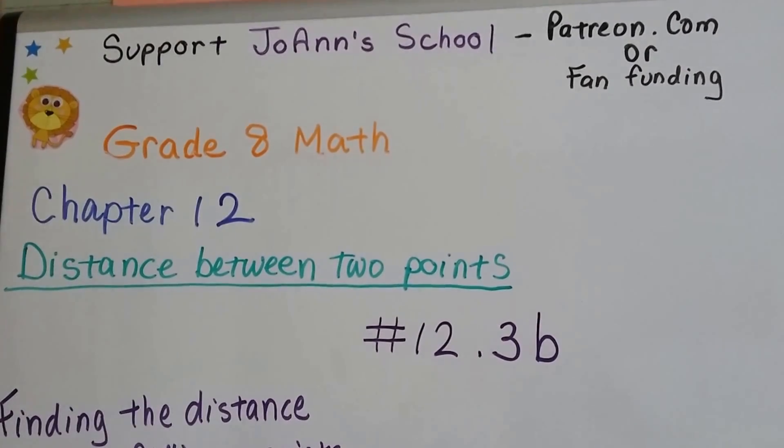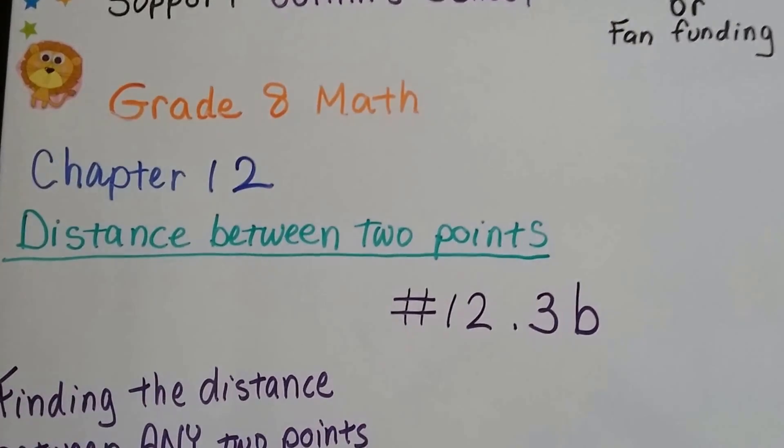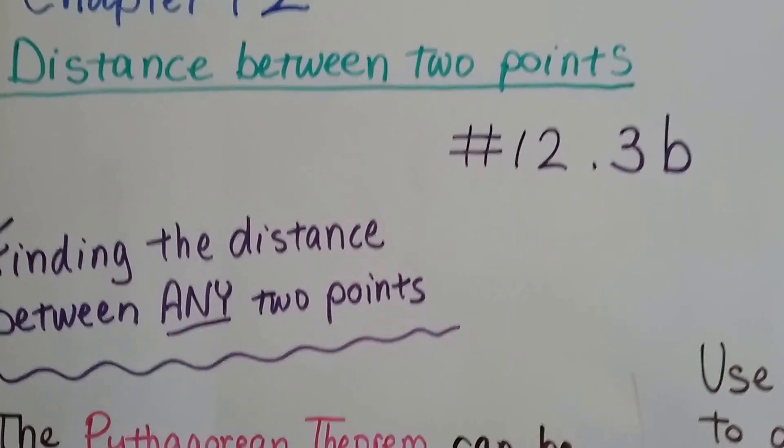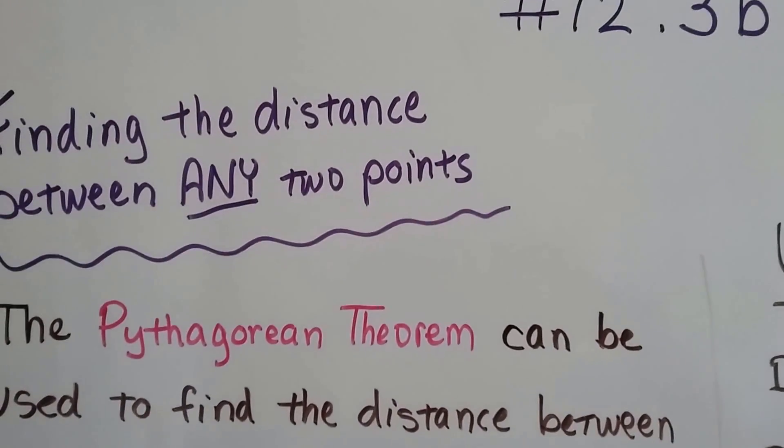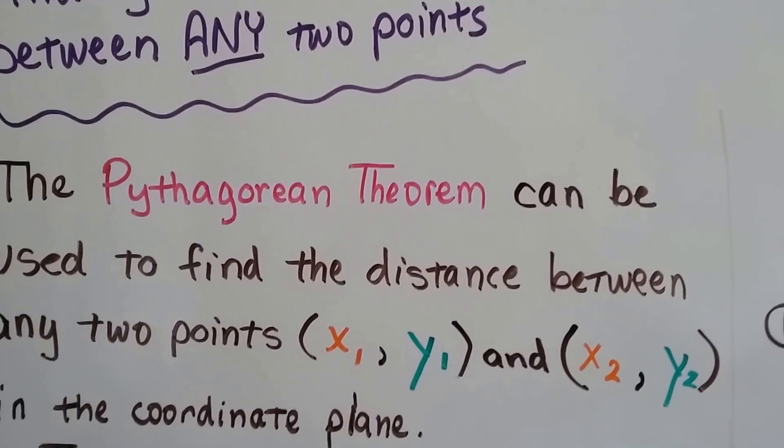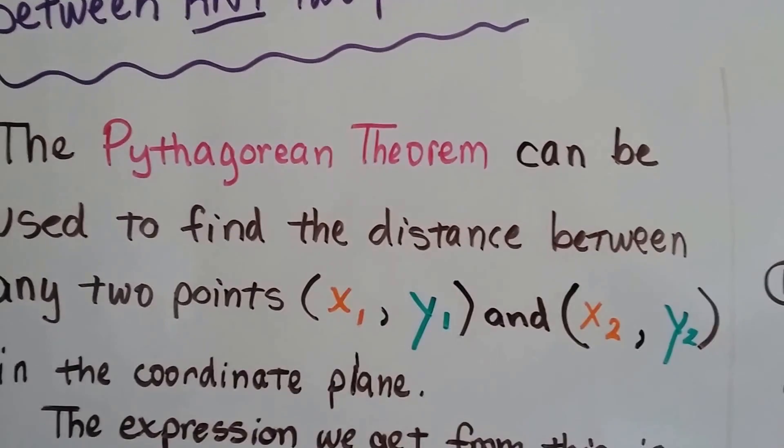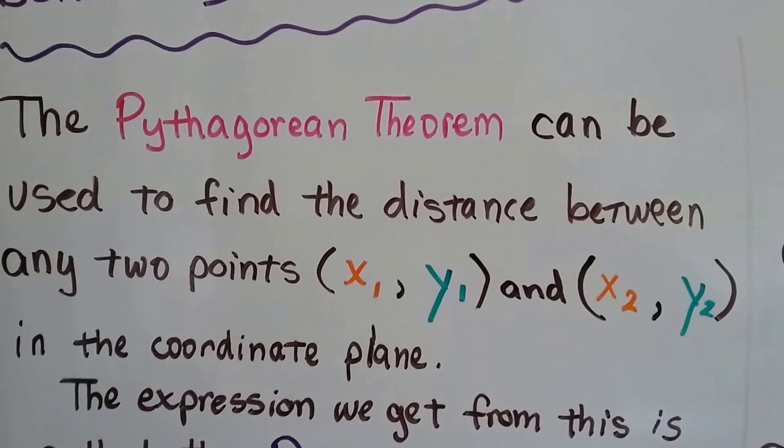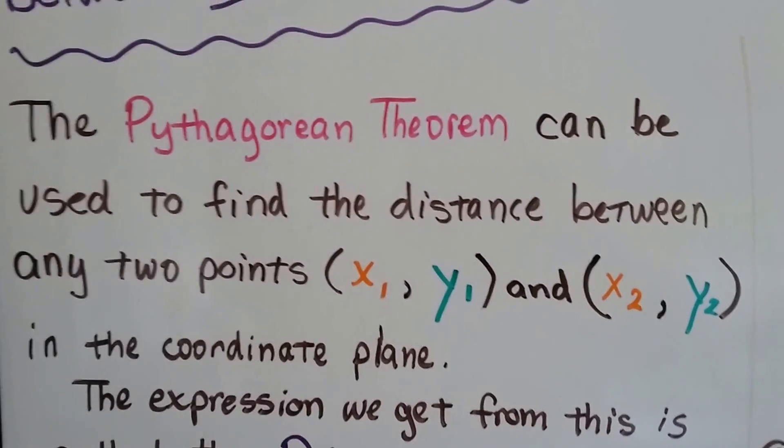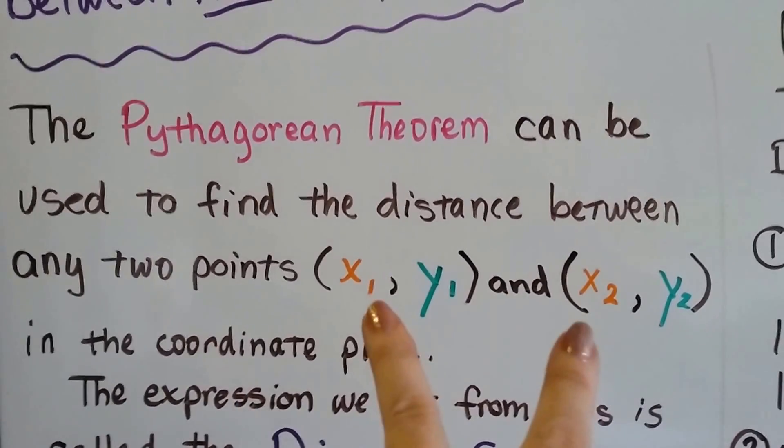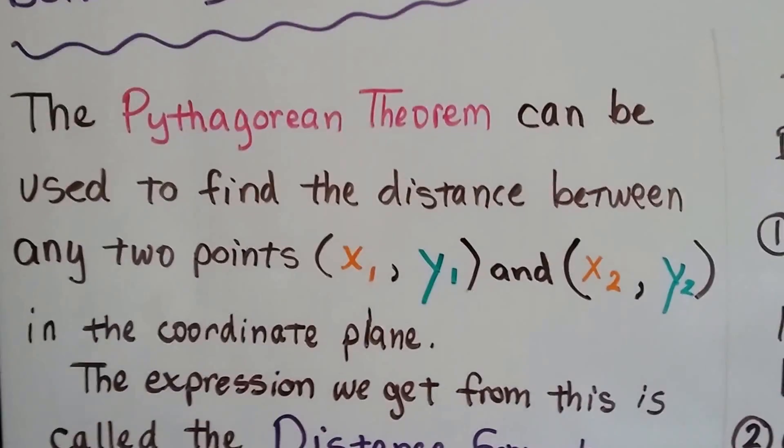Grade 8 math number 12.3b. We've been talking about the distance between two points, and now we're going to talk about finding the distance between any two points. We've also talked a lot about the Pythagorean Theorem, and it can be used to find the distance between any two points, the coordinate pairs x1, y1, x2, y2, in the coordinate plane.